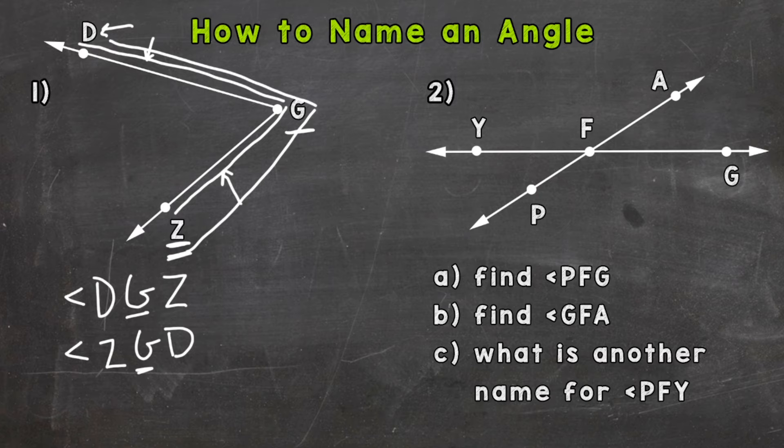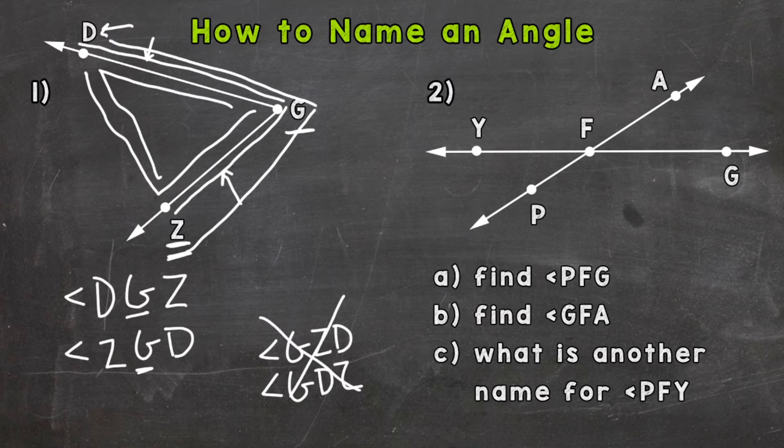Now I'm going to give you a couple of examples that do not work. We cannot do angle GZD because if we start at G and go down to Z and then up to D, that does not give us the angle that we're looking for. And we cannot start at G, go up to D, and then down to Z. Again, we cannot start at G, go to D, and then Z. The vertex needs to be in the middle.